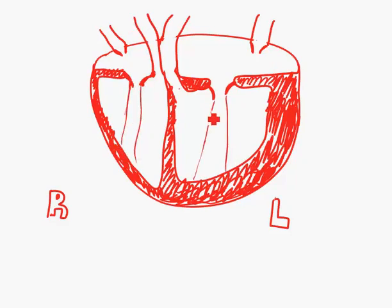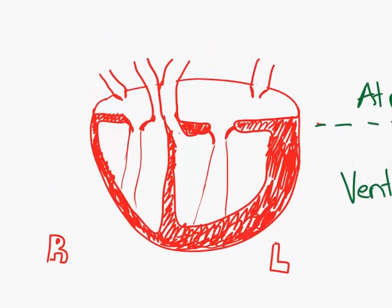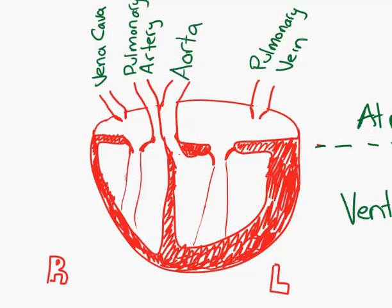The last thing you need to add would be the labels. We have the two atria at the top and the ventricles below. We can then label the vessels at the top.